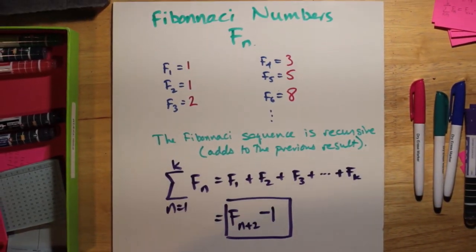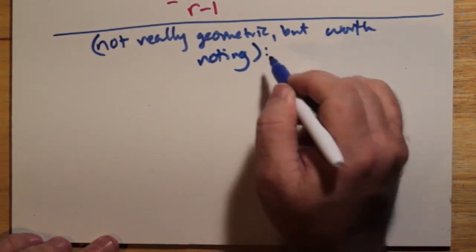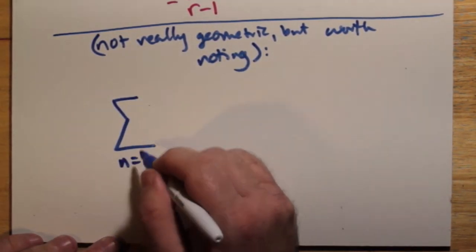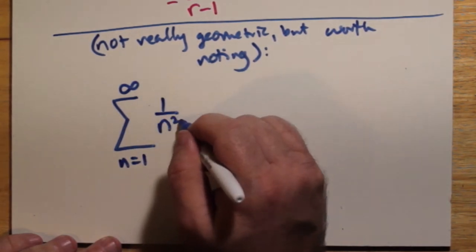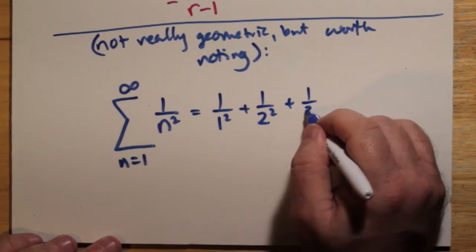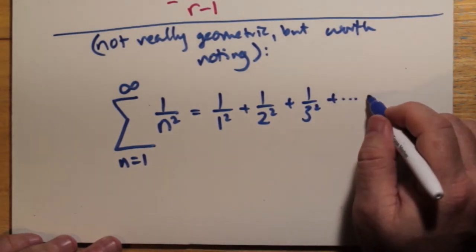There's also another kind of off-topic strange sequence. What about 1 over n squared going from 1 to infinity? This actually works out to be a finite number. It doesn't go to infinity. It ends up being pi squared divided by 6, strangely enough. And that was discovered by Leonard Euler.